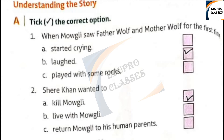Tick the correct option. Question 1: When Mowgli saw father wolf and mother wolf for the first time — Option A: started crying, B: laughed, C: played with the wolves. The answer is B: laughed.